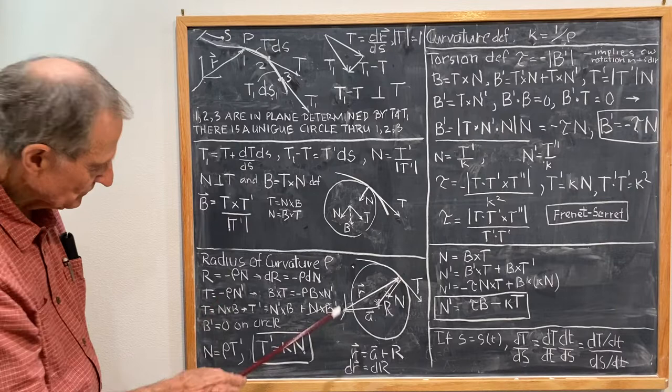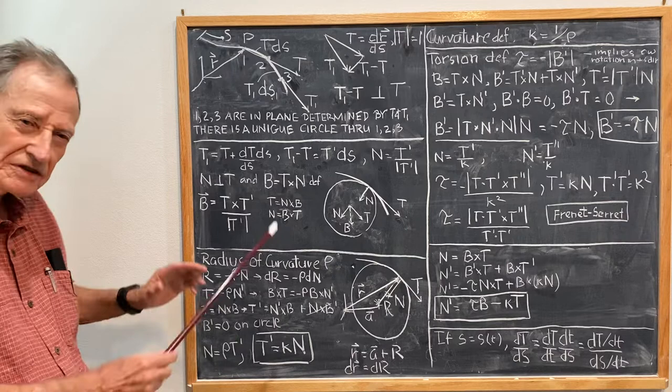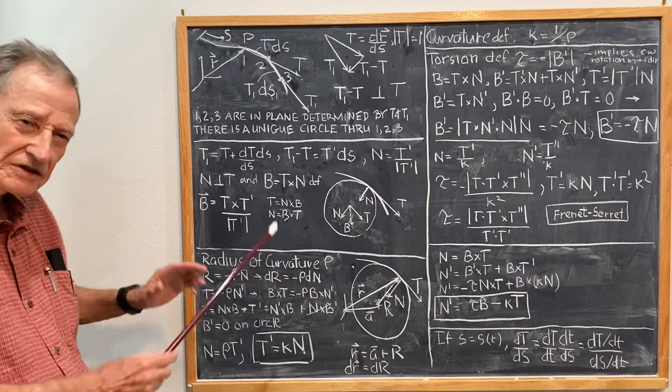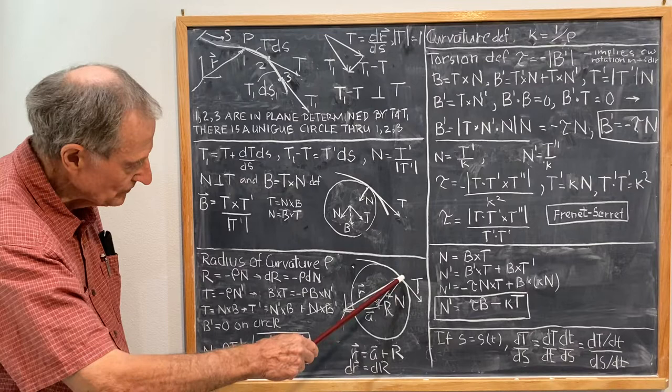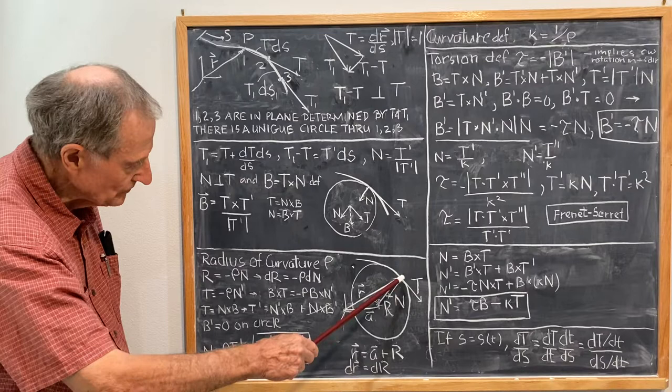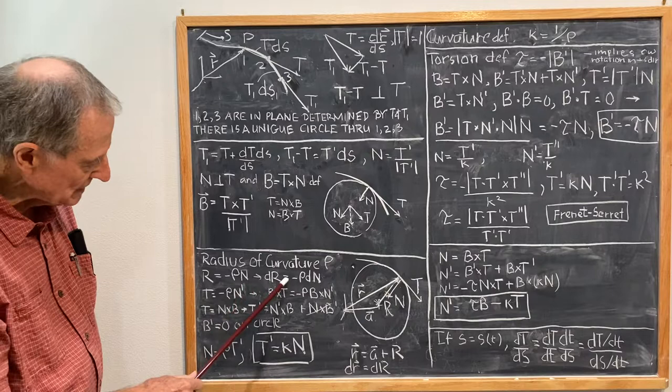And R is equal to minus ρN, and here's where the signs really become important. If you don't pay attention, you just get lost in the signs. ρ is equal to R, the vector from the center of the circle to the point of tangency is R, N points away from the point of tangency, so R is equal to minus ρN, and dR is equal to minus ρdN.